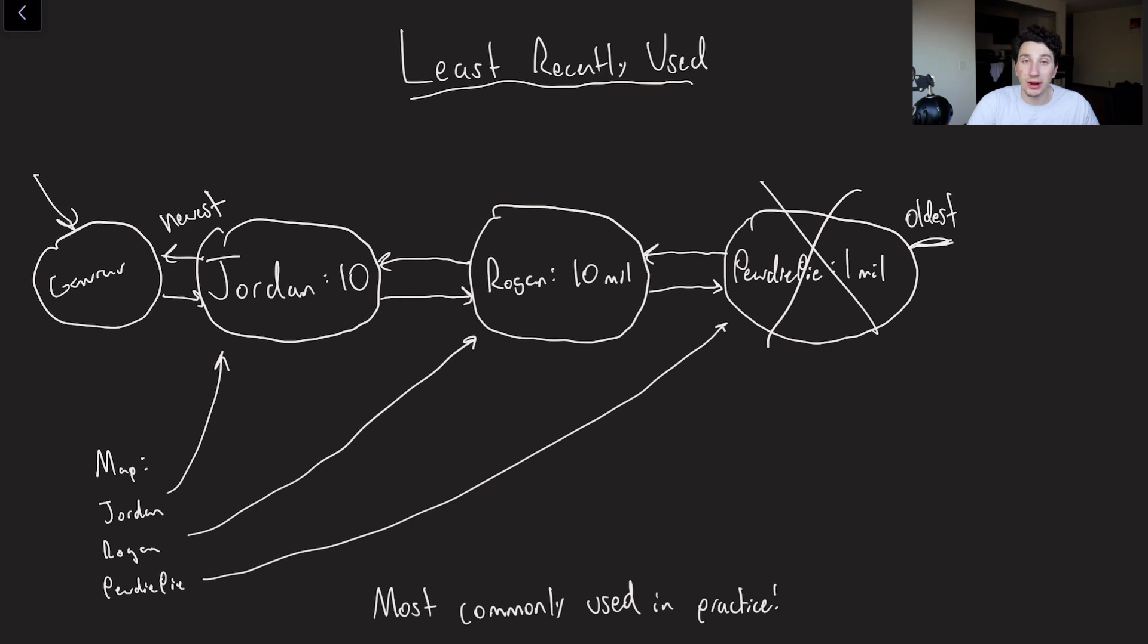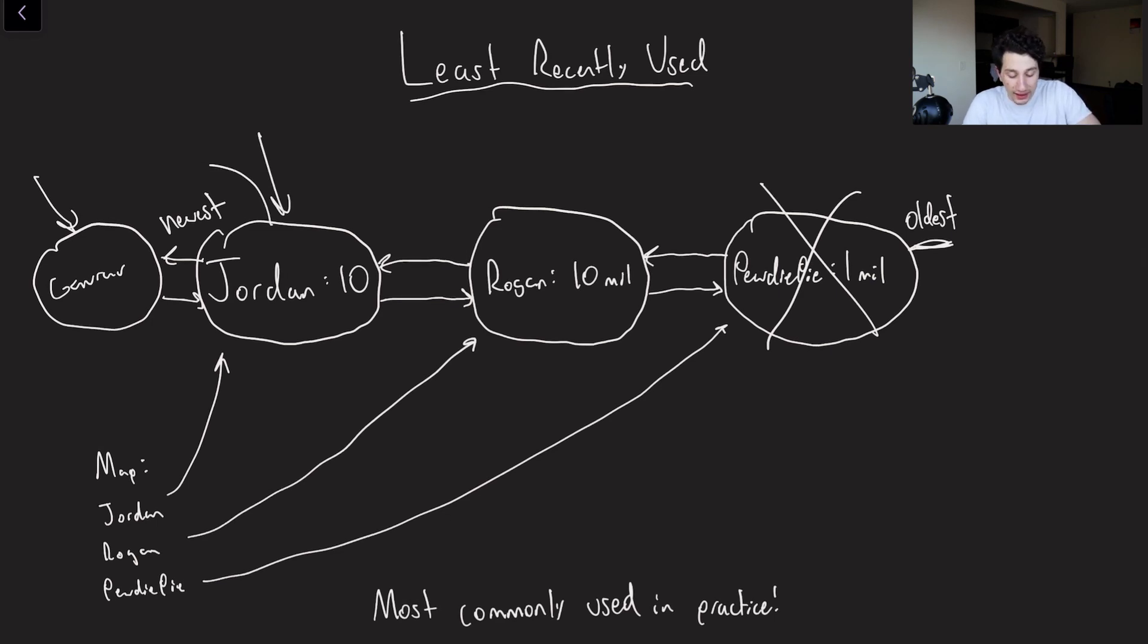But again, the unique thing about LRU is that entries that already exist have to be moved around. So for example, let's say I read my entry. And now I want to move that to the beginning of the list. Basically, I'd have to flip spots with Gaurav to be putting it in the newest section over here. And that right there is the reason why we implement it this way, which is a hash map plus a doubly linked list.